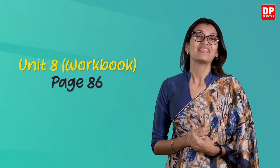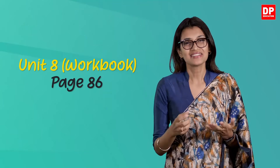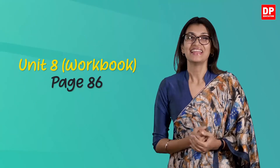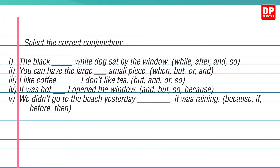Now turn to page 86 of your workbook. There are two activities on conjunctions. Let's look at Activity 12 — select the correct conjunction. The black and white dog sat by the window. You can have the large or small piece. I like coffee, but I don't like tea. I was hot, so I opened the window. We didn't go to the beach yesterday because it was raining.